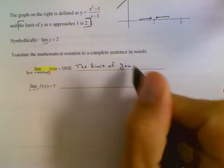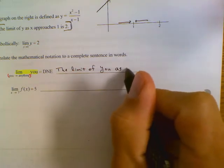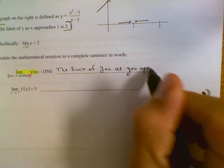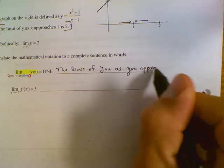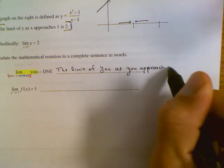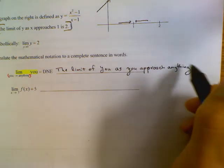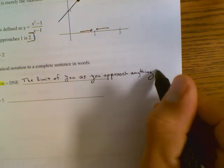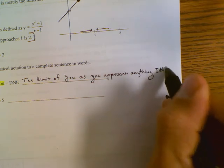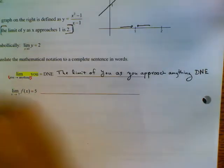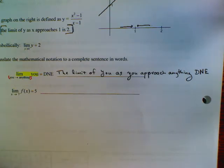And then I'm going to go down to this bottom part here. I'm going to write the word as... you... approach... anything. And then I said DNE, for does not exist. It's mathematically wrong, but it gives us an idea of how to read this.